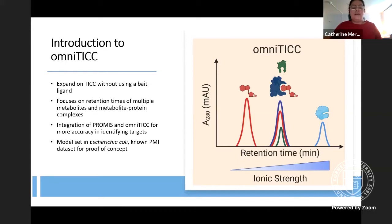Additionally, we eventually could integrate both OmniTIC and PROMIS to identify PMI targets more accurately so that this could be further studied. Moreover, E. coli was used in this because of its fast growth time, simple extraction methods, and it can be compared to already known PMI datasets as proof of concept for this project.